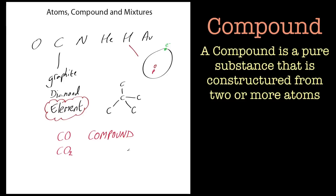A compound is made up of different atoms. Sometimes we call these compounds molecules, and that's what a molecule is — a collection of atoms bonded together covalently or ionically. I urge you to have a look at the covalent and ionic bonding tutorials to understand what that means. So a molecule is really a compound, and a compound is made up of different elements.